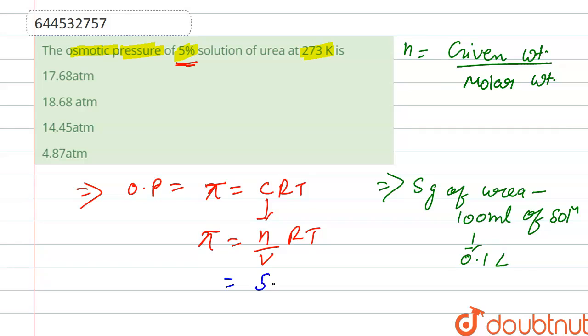We substitute the given weight, which is 5 grams, upon molar weight of urea, 60 grams per mole, into volume 0.1 liter, times the gas constant whose value is 0.0821 atm liter Kelvin inverse mole inverse, into temperature.